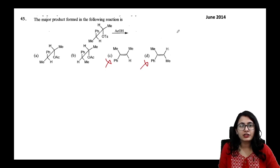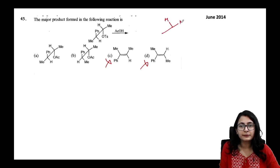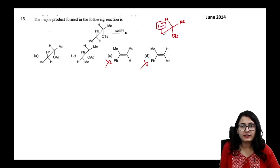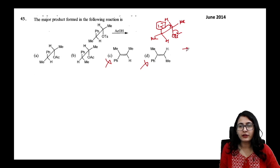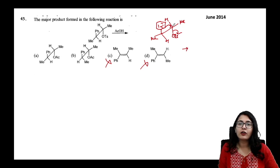The molecule is given in a sawhorse projection. Writing it with the phenyl ring explicitly, the double bond attacks the carbon bearing OTs, OTs is replaced, and there is inversion on that carbon.